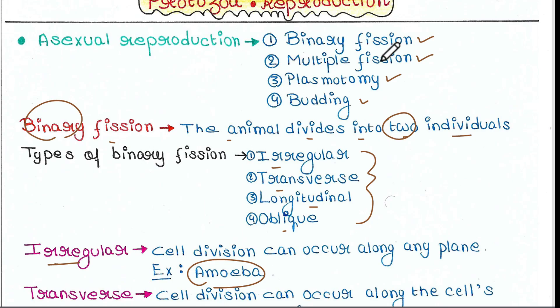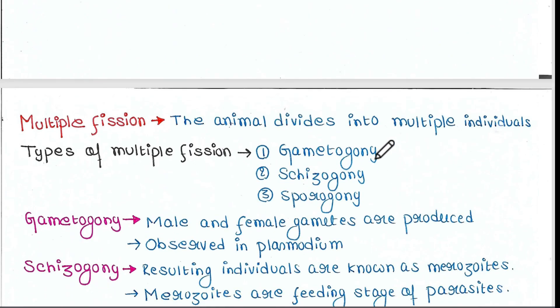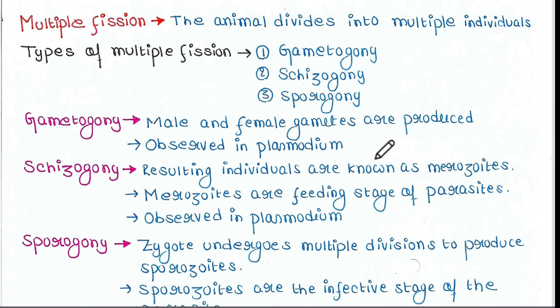Next we have multiple fission. From the name itself you can understand — fission means division, and multiple because the animal divides into multiple individuals. Multiple cells will be formed from one cell. Three types of multiple fission are observed: gametogony, schizogony, and sporogony.